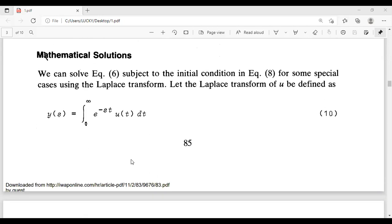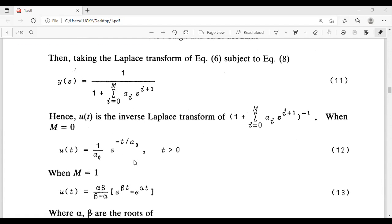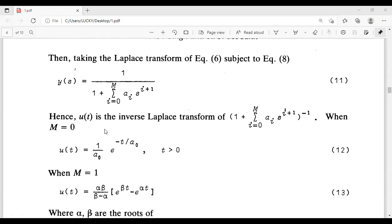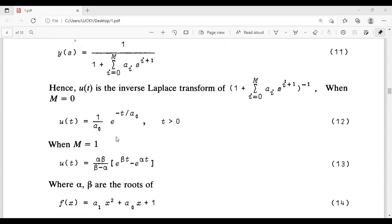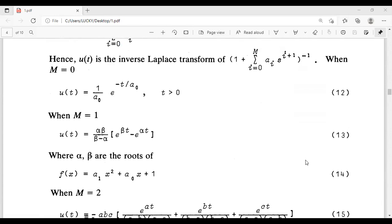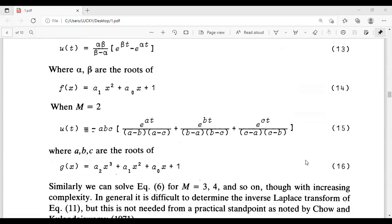Mathematical solutions. We can solve equation 6 subject to the initial condition in equation 8 for some special cases using the Laplace transform. Let the Laplace transform of u be u(s) equals integral 0 to infinity e^(-st) u(t) dt. Then taking the Laplace transformation equation 6 subject to equation 8. Hence, u(t) is the inverse Laplace transform of u(s). When m equals 0 and m equals 1.